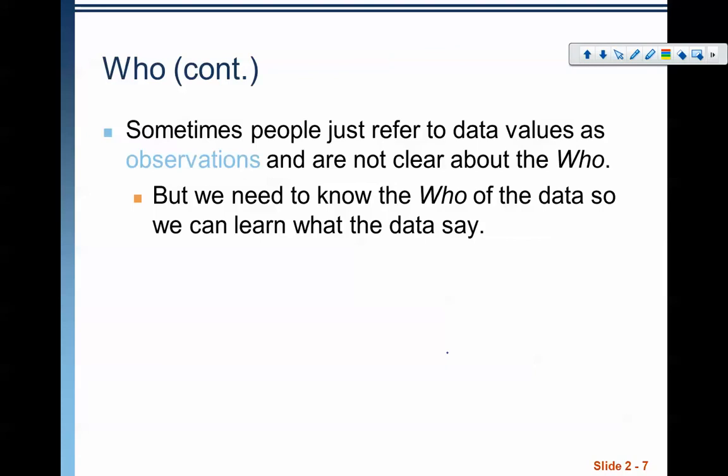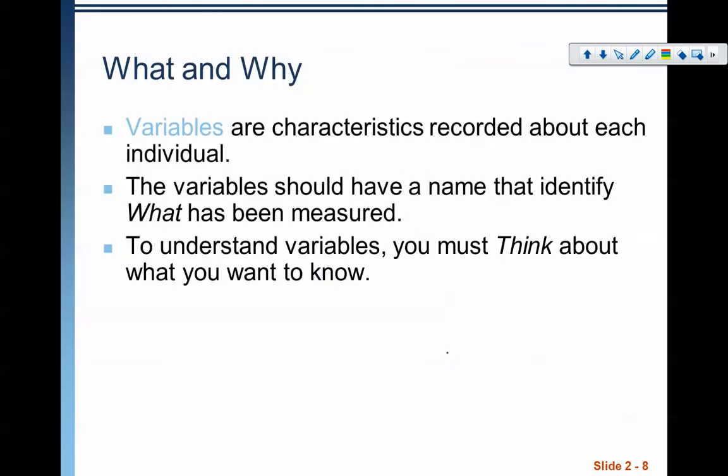We sometimes have observations if we're not clear about what it is. If it was pulled from an online source or database, they might just be observations. But we need to know the who of the data so we can learn what the data says. What about the what and the why? Variables are characteristics recorded about each individual. Variables should have a name that identifies what has been measured. One thing we need to be careful of when talking about variables is that they have a different meaning in statistics than in your other math classes.